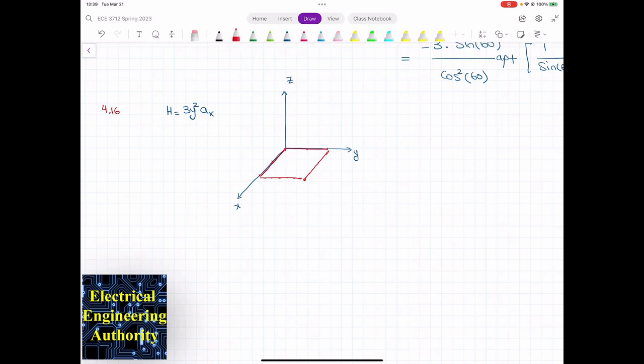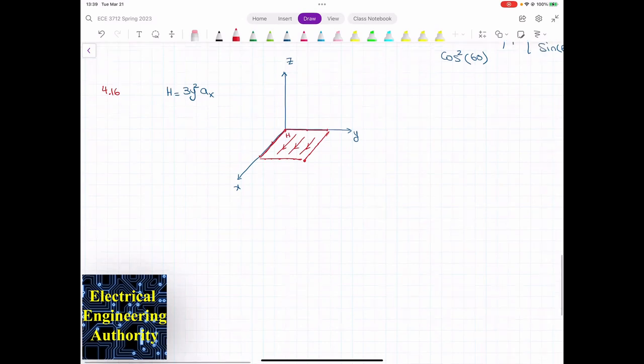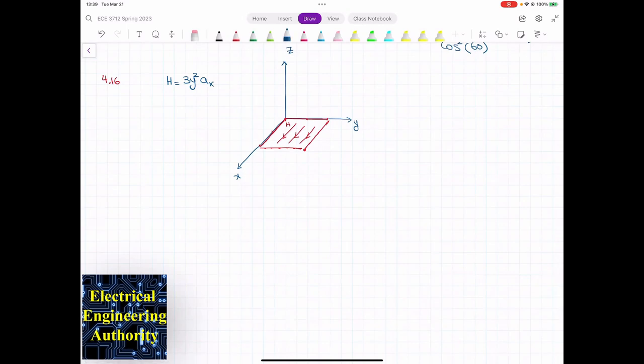At the same time, H is in the x direction. So these are the directions of the H that I have. What we're looking for? We're looking for the current passing through this square. So we want to find the I enclosed because I have a closed path and I want to know what is the current that is passing through this path. So the Ampere Circuital law: integral of H·dL is equal to I enclosed.